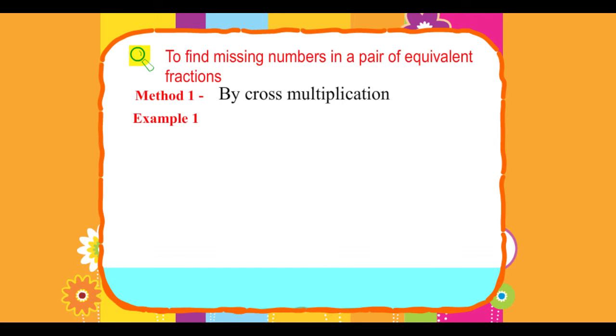Example 1: 3 upon 5 equals dash upon 15. Cross multiply 3 into 15 equals 45.